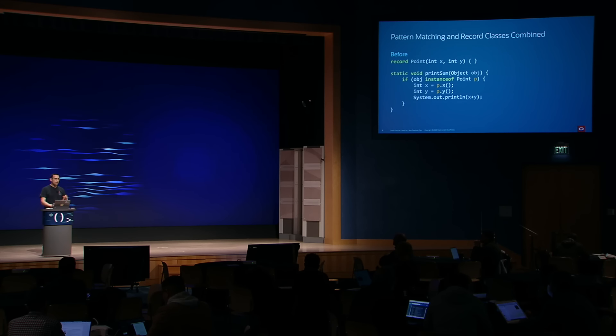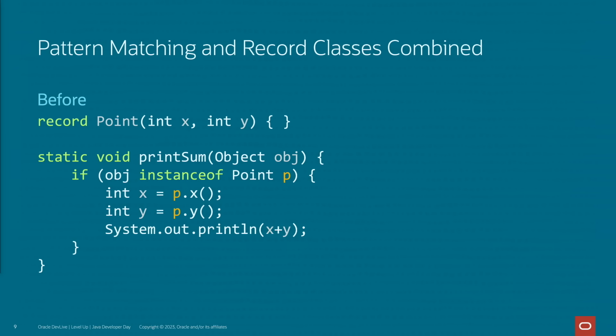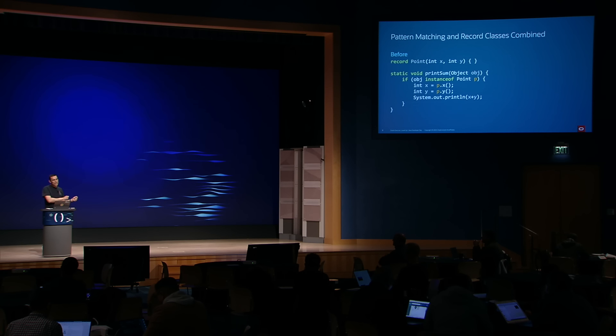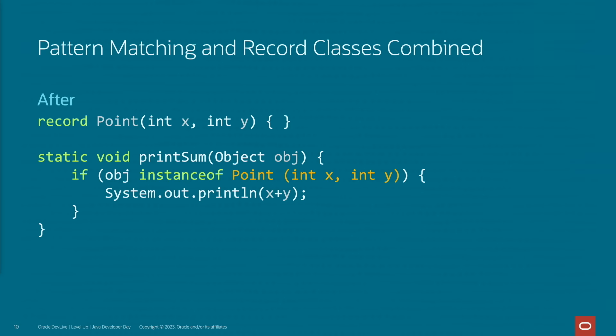In JDK 20, we can see a combination of pattern matching and record classes. In this example, we've defined a record class called Point with the expected components x and y. In this printSum method, we want to first test if the object we received is a Point, and if it is, use the values of that point. Notice that intermediate variable p — we've only created it to access the x and y values. It would be better if we could not only test whether it's a Point, but also extract those values and use them directly. The highlighted part — Point(int x, int y) — that's the record pattern.